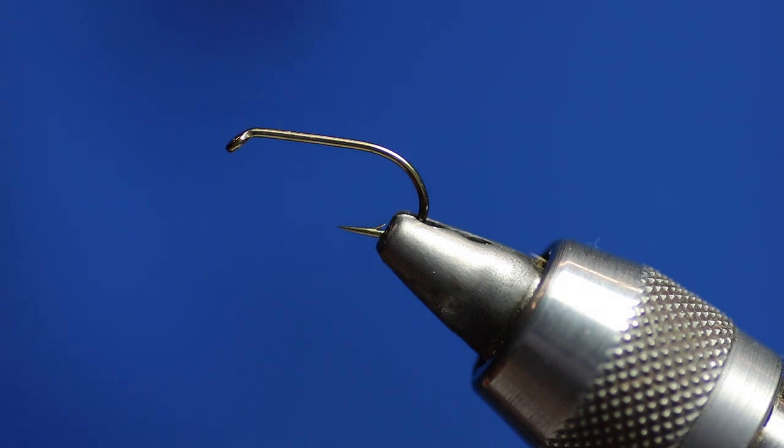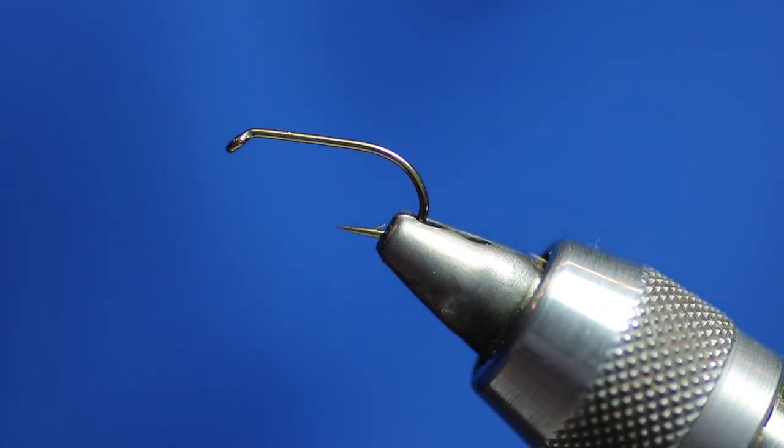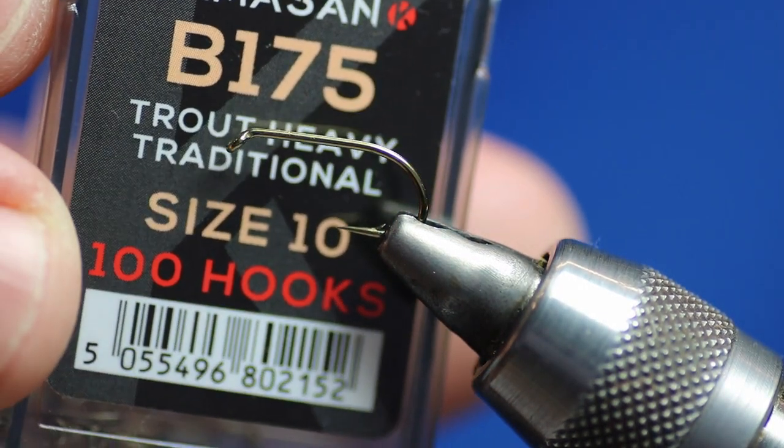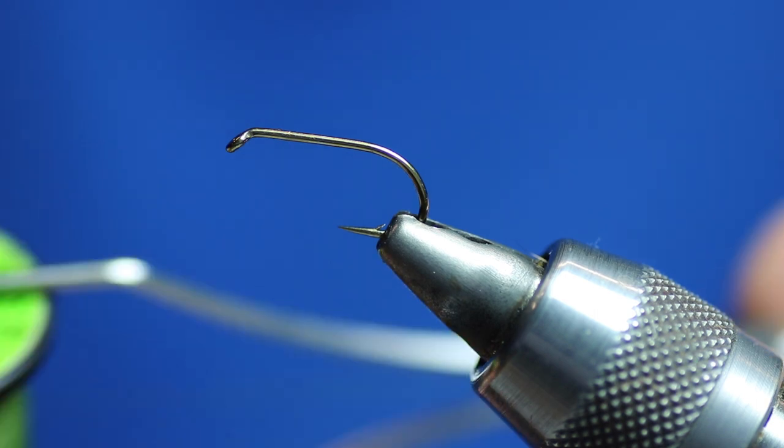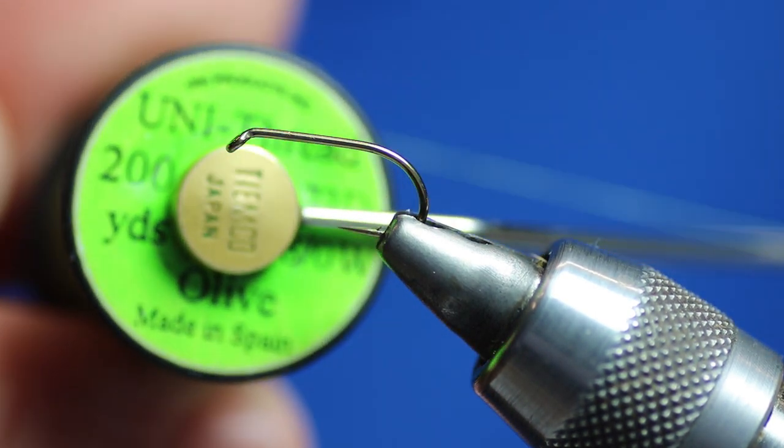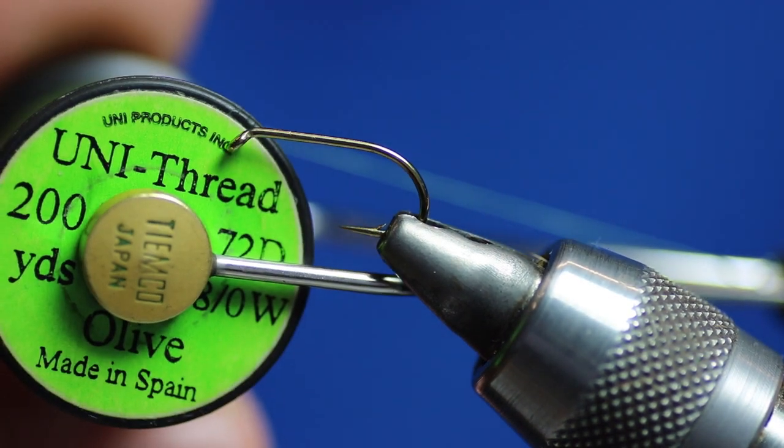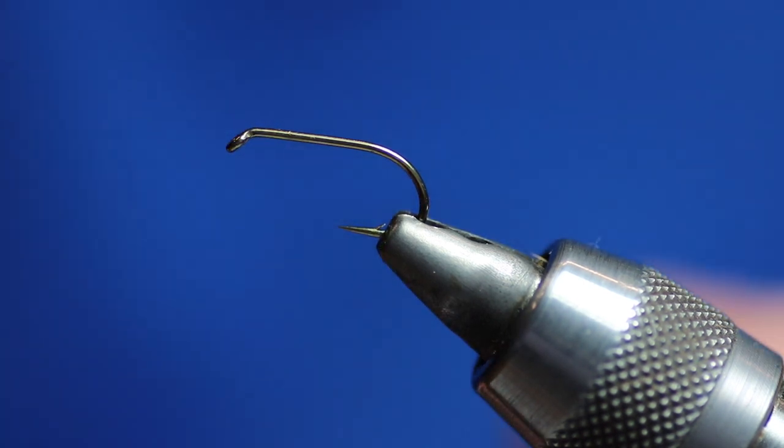I'm tying it on a straight hook. So what we've got is we've got a B175, that's on a 10, Kamasan again. We're going to be tying it with some olive thread, you can use whatever olive thread you like. I like the color on the uni-thread olive and it's 8-0. It's a nice olive color.